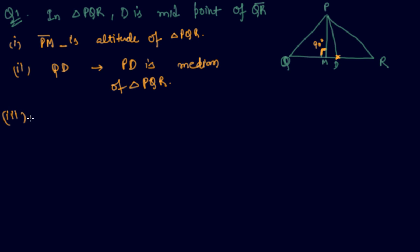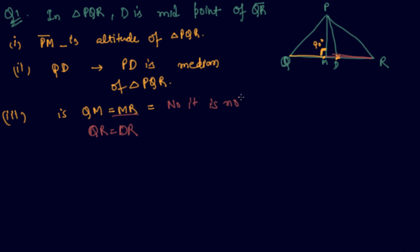Now the third part asks: is QM equal to MR? No, because QD equals DR since D is the midpoint — but that does not mean QM equals MR. So the answer is no, they are not equal.